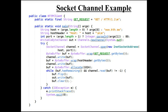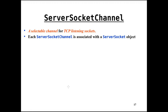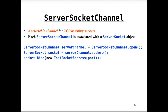The server socket channel is for server sockets — TCP listening sockets — with one server socket object associated with each server socket channel. To use it: open the channel, retrieve the underlying socket, and bind that socket to a particular port on the local machine. Once bound, the server socket can receive connection requests that will be queued until accept is called.